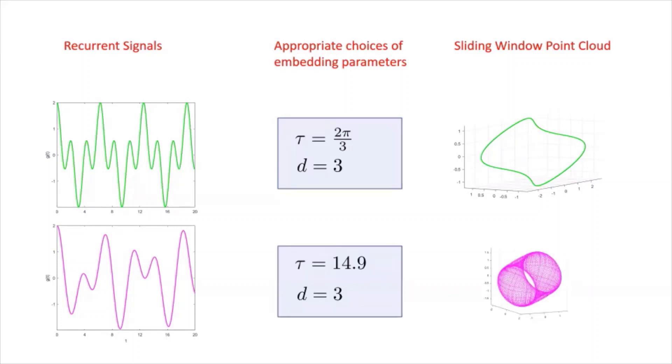Similarly, for appropriate values of the embedding parameters, we get back something homeomorphic to a two torus. Now, I do want to comment that the pictures on the right, the sliding window point cloud pictures are not the actual pictures, but the PCA representations in three dimensions because the actual sliding window point clouds sit in R4.